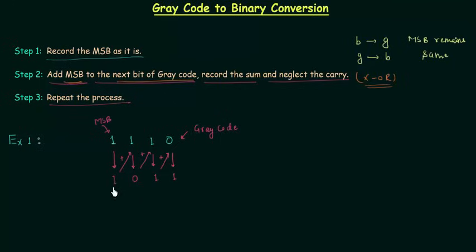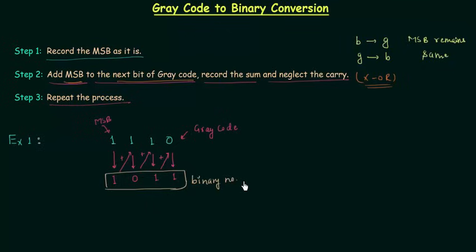So the binary number is 1011. This is the obtained binary number and our answer. This is how we convert gray code to binary.